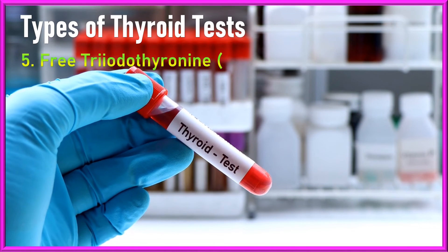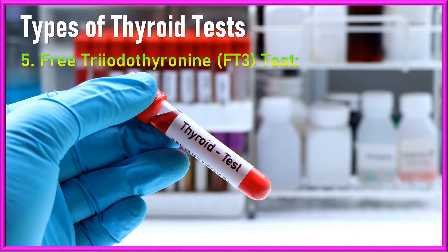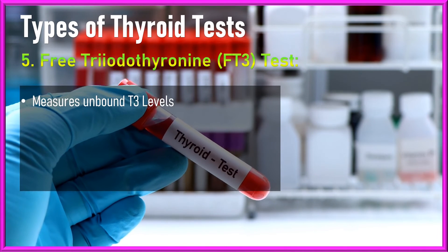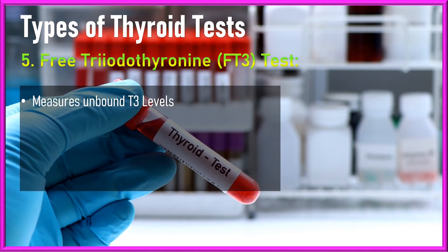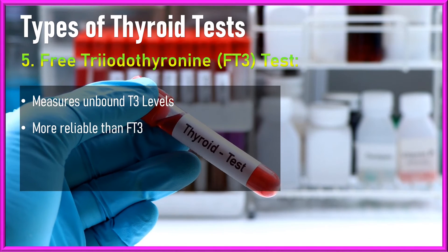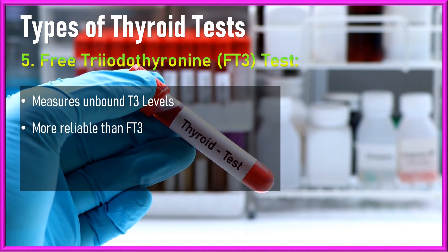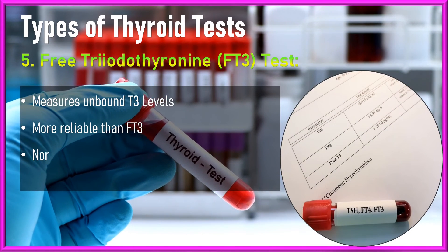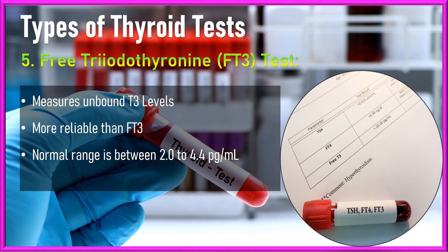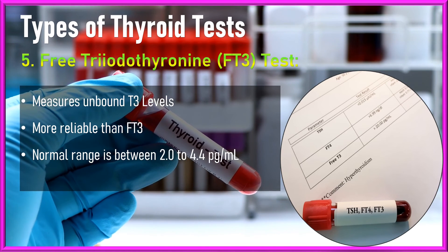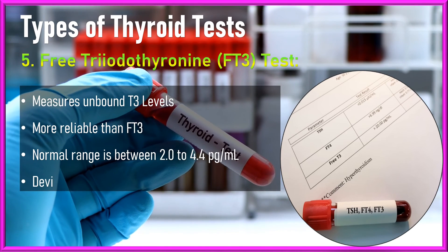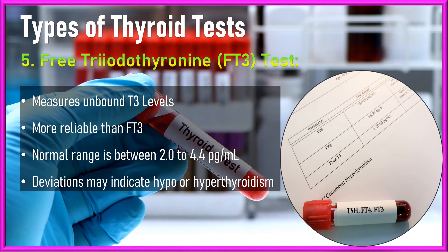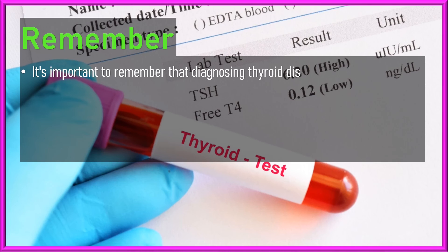Number five, the free triiodothyronine test, or FT3. The FT3 test specifically measures the unbound T3 levels in the blood. It is considered more reliable in assessing thyroid function than the total T3 test. The normal FT3 range is approximately 2.0 to 4.4 picograms per milliliter. Deviations from this range may indicate thyroid issues.